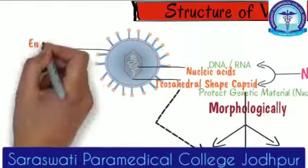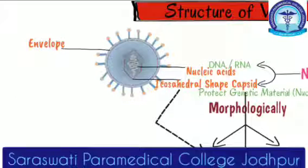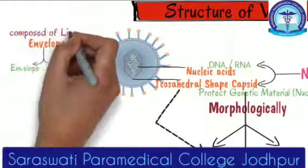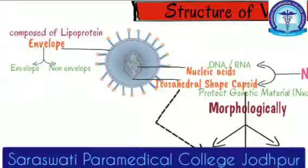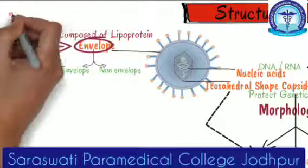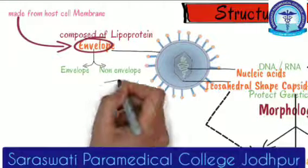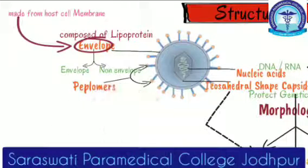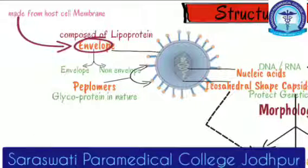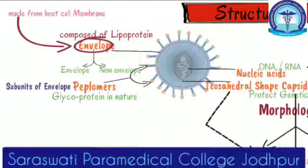The outermost layer is the envelope. This is not present on every virus. Based on whether the virus contains an envelope or not, they are divided into enveloped and non-enveloped viruses. Chemically, the envelope is lipoprotein in nature. The lipid of the lipoprotein is derived from the host cell membrane. The envelope contains spike-like structures called peplomers, which are chemically composed of glycoprotein and are the subunits of the envelope. Peplomers are antigenic in nature.